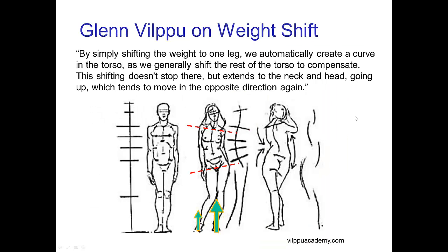Glenn Vilppu, great teacher, puts this very nicely. He says, by simply shifting the weight to one leg, we automatically create a curve in the torso as we generally shift the rest of the torso to compensate. The shifting doesn't stop there, but extends to the neck and the head going up, which tends to move in the opposite direction again, so we get the very distinctive line of action in the entire pose resulting from this weight shift.